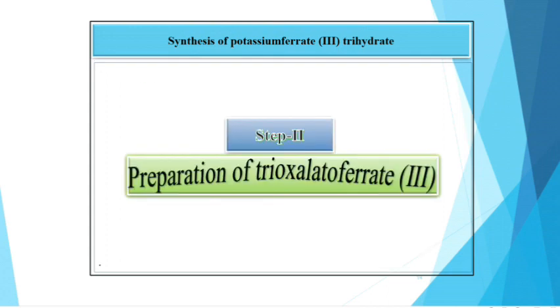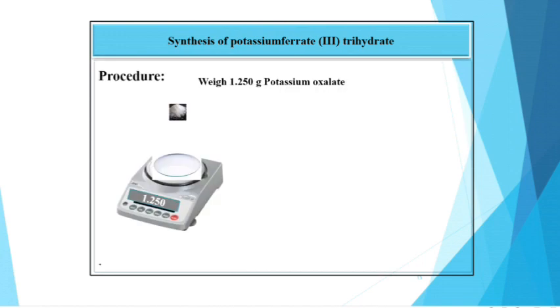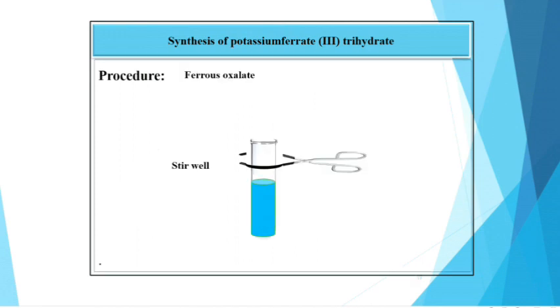Next step is the preparation of trioxalato ferrate. For this, weigh exactly 1.250 gram of potassium oxalate. Then, take 10 ml distilled water. To this, add this potassium oxalate.